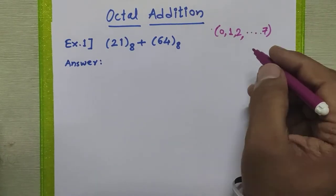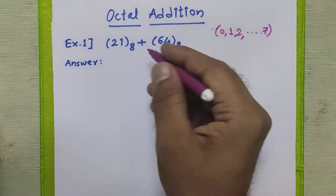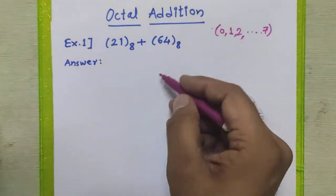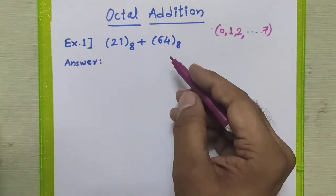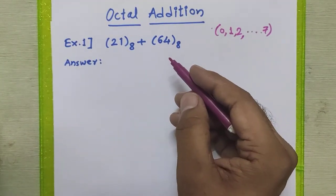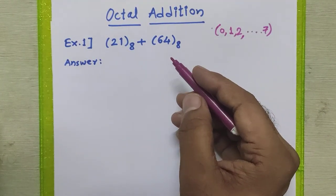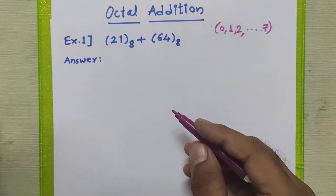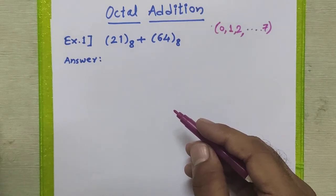So how do we perform this addition? We are going to perform the addition of two octal numbers the same way we perform the addition of two decimal numbers in normal mathematics.